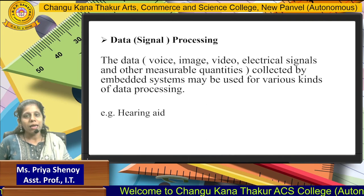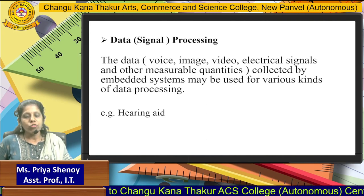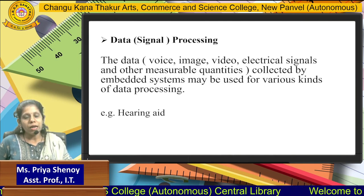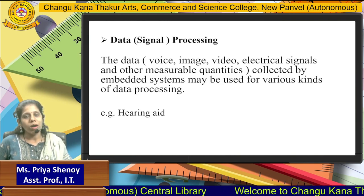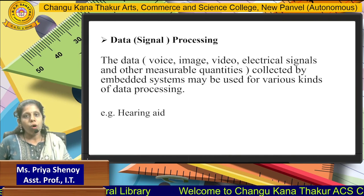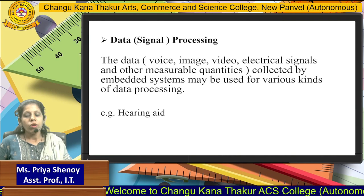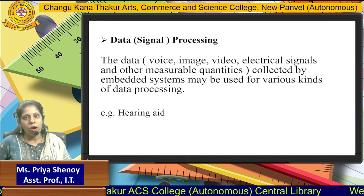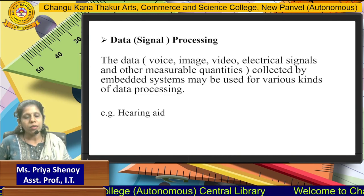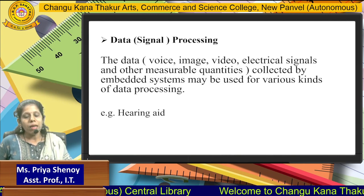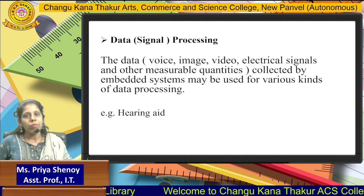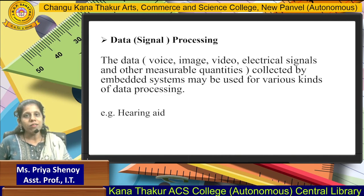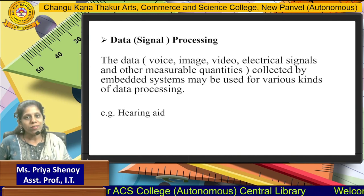Coming to data or signal processing — any type of data may be in the form of voice, image, video, electrical signals or any other measurable quantity. All these forms are considered as part of data. The data collected by the embedded system may be in the form of voice, image, video, electrical signals or any other format, and may be used for various kinds of data processing. A best example for this is the hearing aid, which is used to convert voice into signals.